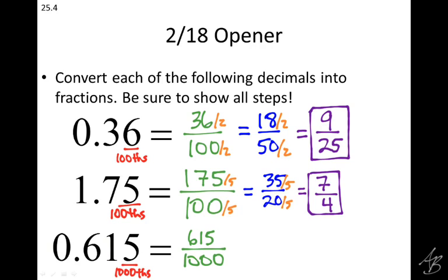Can I reduce that? Yes. By what? By 5. We'll reduce by five. 615 divided by five is 123, and 1,000 divided by five is 200. Can I reduce that? No. Nope, we're done. We can't reduce it by two, we can't reduce it by five. We know that there's nothing else that's going to go into both of them, so we can stop.